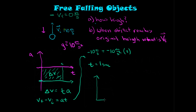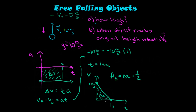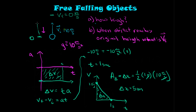Let's look at the velocity-time graph. It starts at an initial velocity of 10 meters per second, and we know it reaches a final velocity of 0 at one second. Drawing a line between them gives a triangle. The area of this triangle — which equals displacement — is one-half times the base (1 second) times the height (10 meters per second). The seconds cancel, giving 10 divided by 2, which is 5 meters. So the object went up 5 meters.